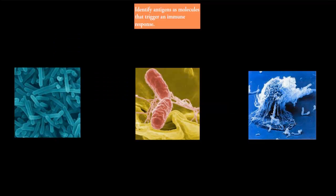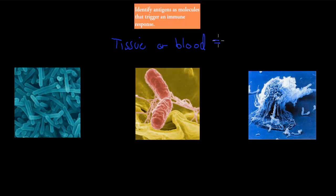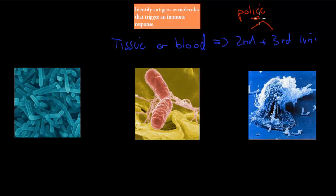We're going to talk about the second line and third line of defense. The second and third line of defense is all about the police of our body trying to kill off bacteria once they've managed to get inside our tissue and blood. Once they're inside, it means the first line of defense has been penetrated, and the second and third line of defense take over. Much of our second and third line of defense is like our police force — looking for bacteria or pathogens that have gotten into our body and trying to kill them.